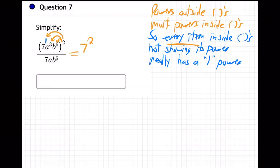Okay, so what do we get then? This would be seven to the two, A to the six, B to the 12, over seven, A, B to the fifth, right?